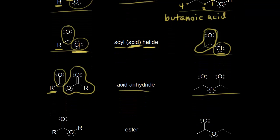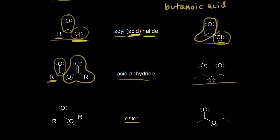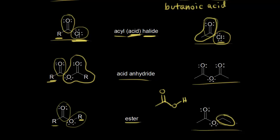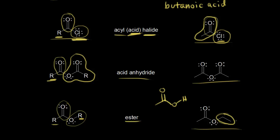Next, the ester is another carboxylic acid derivative. A carboxylic acid had a hydrogen in this position, but now we have an R group — so we have our carbonyl, an OR group, and an R on the left. Here's an example: we have an ethyl group instead of a hydrogen. Acetic acid had a hydrogen here, and now we have an ethyl group, so instantly we know we're talking about an ester. To name it, we have the ethyl group, so that's ethyl, and this part would be acetate — so ethyl acetate is the name. The naming of all these compounds will come later in the course.